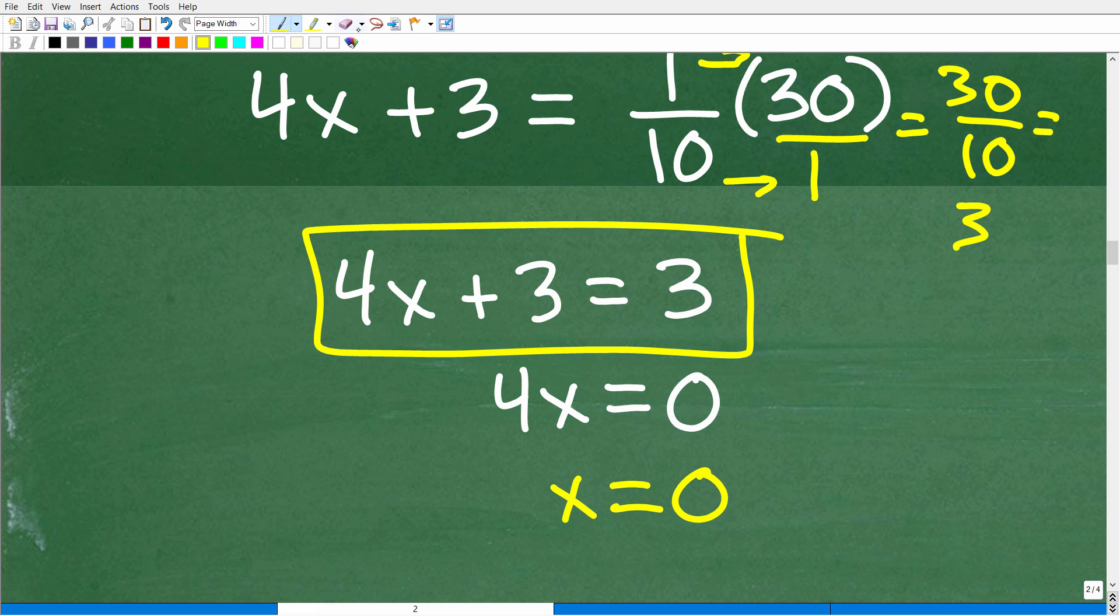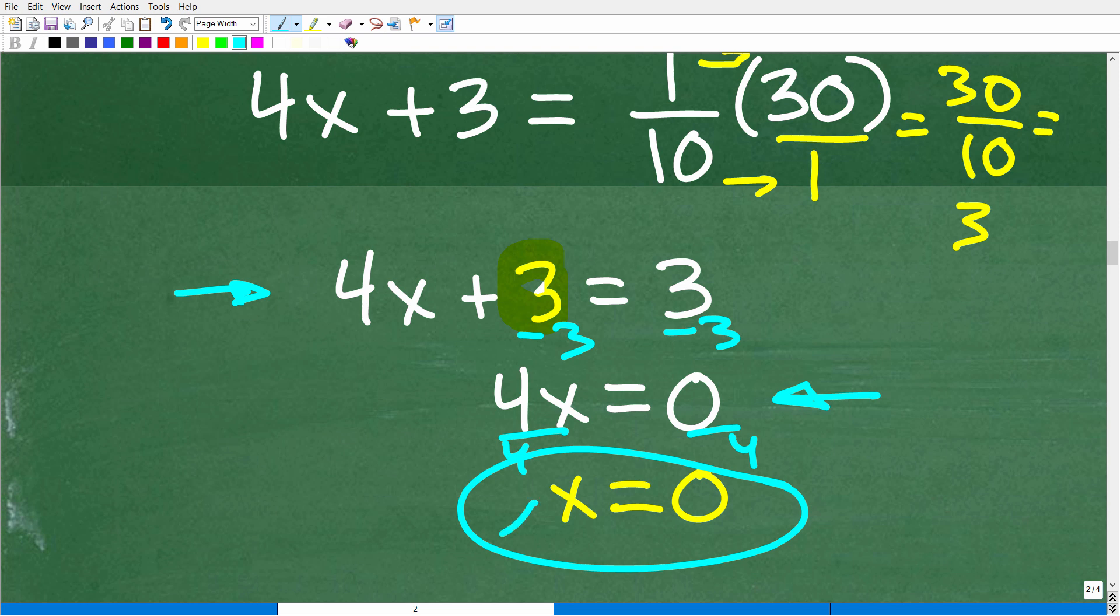Alright, so now our problem is down to this. 4x plus 3 is equal to 3. 4x plus 3 is equal to 3. So how can this statement be true? Well, if this is 3 and this is 3, well, we really don't have a need for this, right? This kind of has to go away in order for 3 to be equal to 3. Now, let's finish up with the algebra here, but you can see why our answer is going to make sense. So what we need to do to solve the rest of this equation is subtract 3 from both sides of the equation. And we're going to get 4x is equal to 0. Alright, so now we get to solve for x by dividing both sides of the equation by 4. And we've got 0 divided by 4, which is 0. So x has to be 0 because 4 times 0 is 0. This goes away, and we end up with 3 is equal to 3.